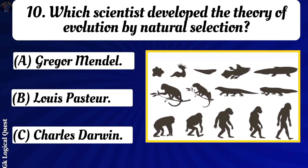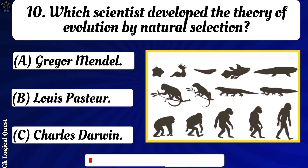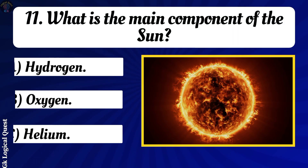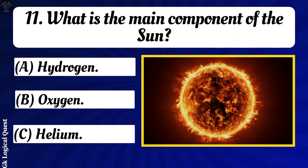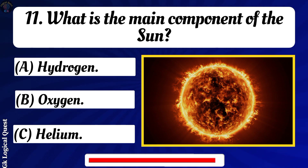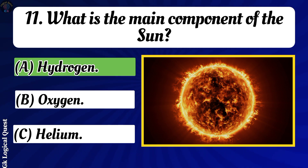Which scientist developed the theory of evolution by natural selection? What is the main component of the sun? Answer: Hydrogen.